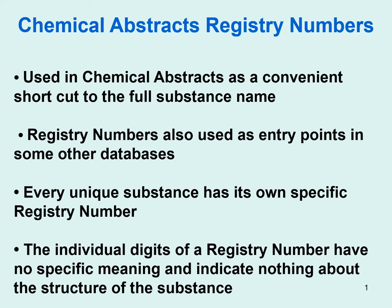Besides Chemical Abstracts, the registry number system is so useful and so popular it's used in many other databases. It is at such a level of detail that every unique substance and every variation of a substance has its own specific registry number. When you look at these numbers themselves, there is no meaning in the actual digits — they just record substances as they are received in Chemical Abstracts, and it means nothing whether a number is small or large.